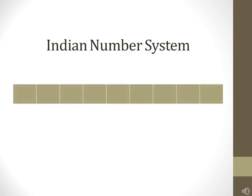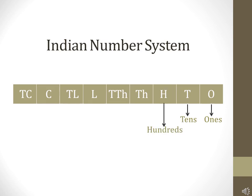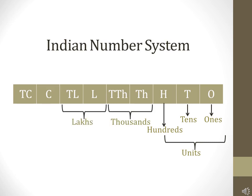Here is the Indian number system, under which I have placed the place value chart. Go through the place value chart once again. First we have 1's, then we have 10's, after that 100's, and all three come under the unit's period. After the unit's period, we have the thousands period, then the lakhs period, and then the crores period. This is what we studied in the last class, and with the help of this place value chart, we are going to write the number names.